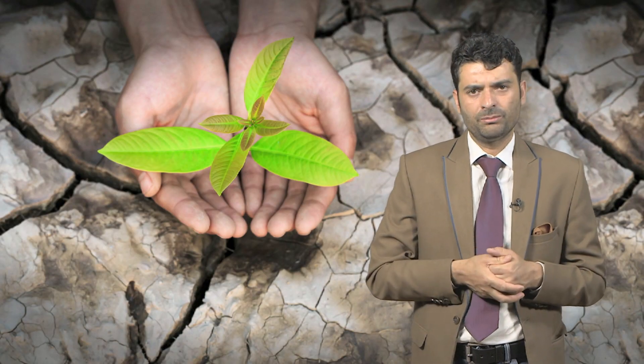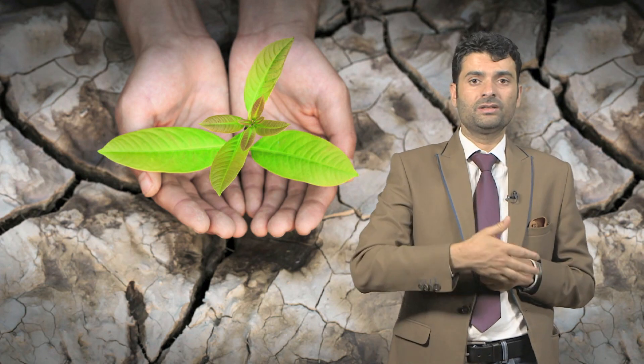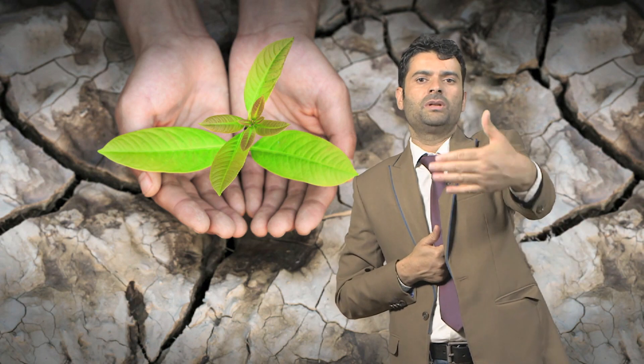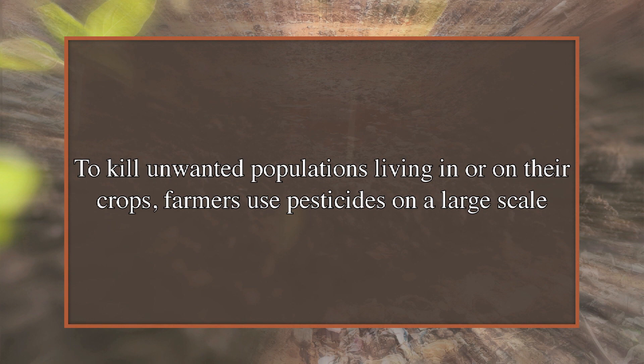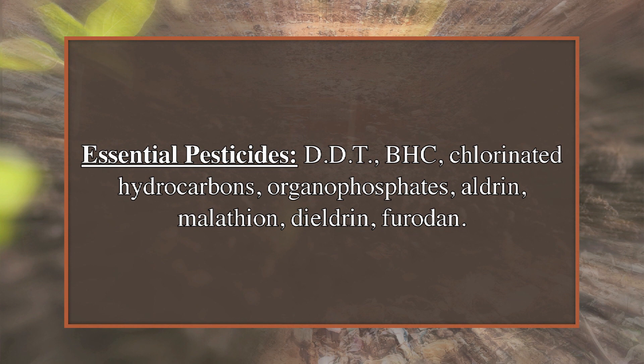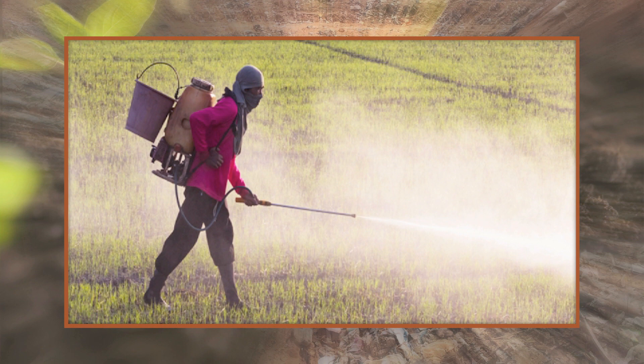Plants on which we depend for food are attacked by insects, fungi, bacteria, viruses, rodents, and other animals, and weeds compete with plants for nutrients. To kill unwanted populations, farmers use pesticides on a large scale. The essential pesticides include DDT, BHC, chlorinated hydrocarbons, organophosphates, aldrin, malathion, dieldrin, and others. The remnants of such pesticides may get absorbed by soil particles, contaminating root crops grown in that soil. Consumption of such crops causes pesticide remnants to enter human biological systems and affect them adversely. Pesticides not only bring toxic effects on humans and animals but also decrease the fertility of the soil.